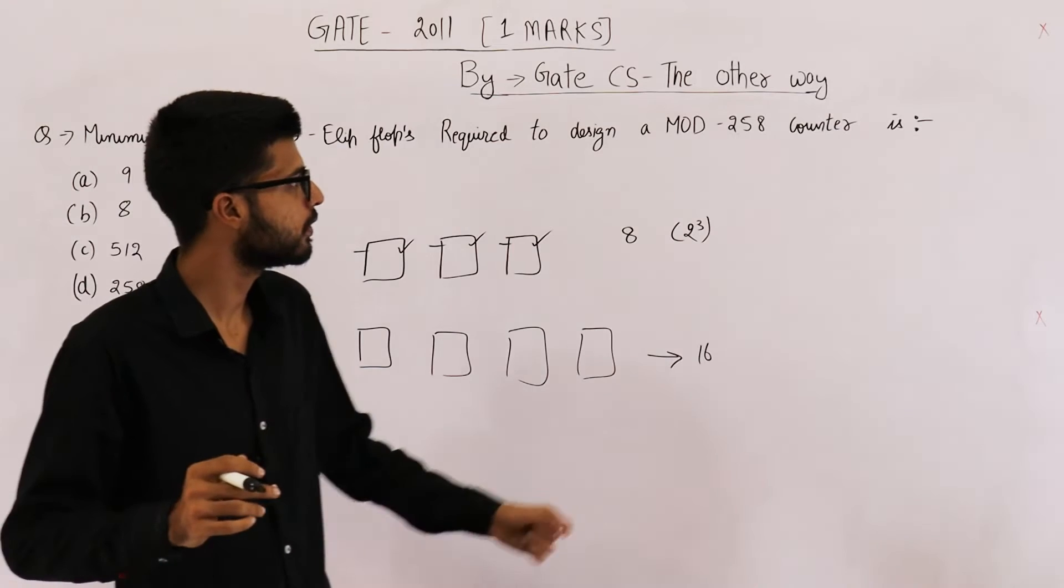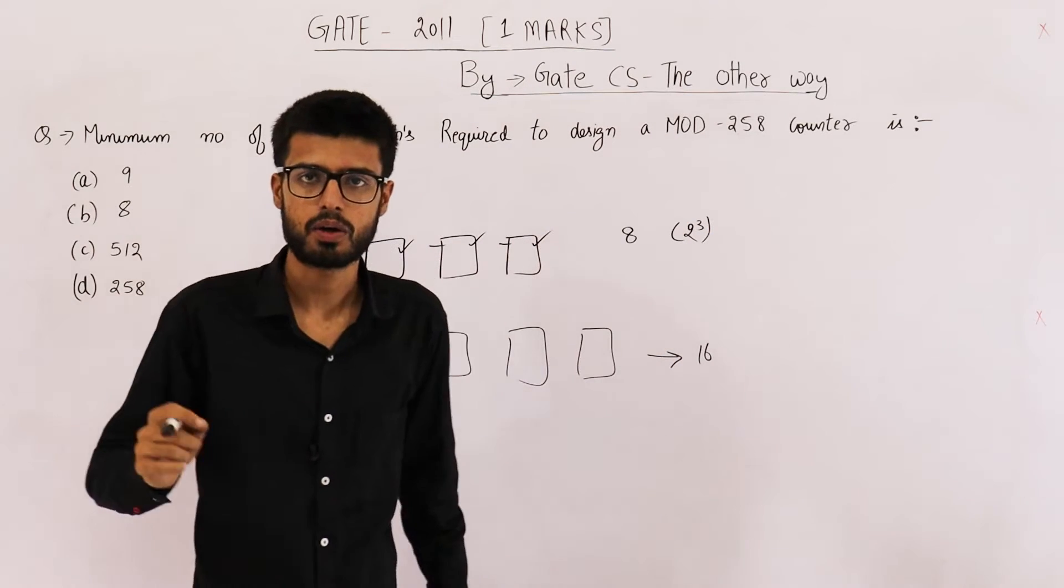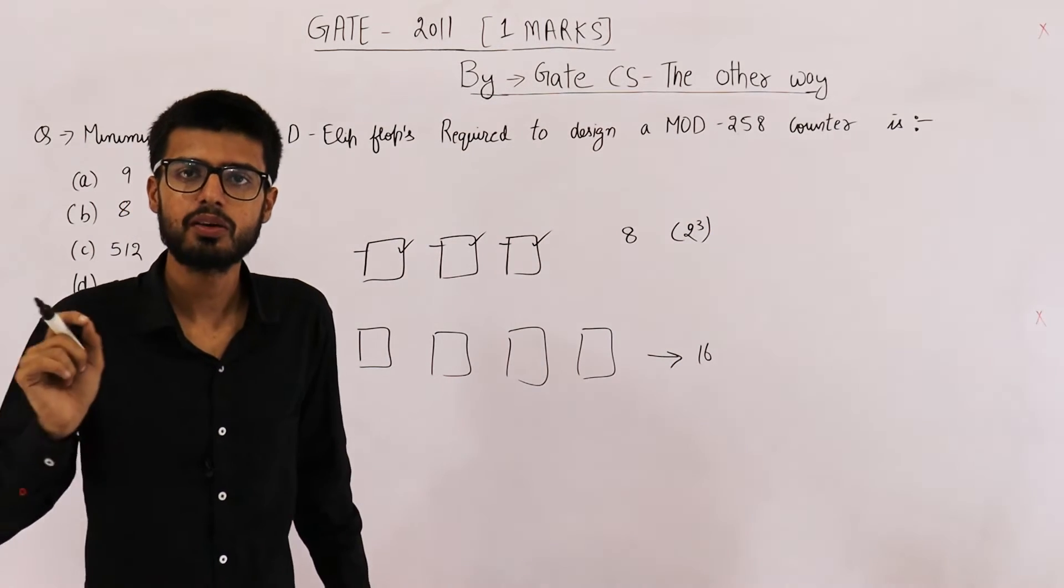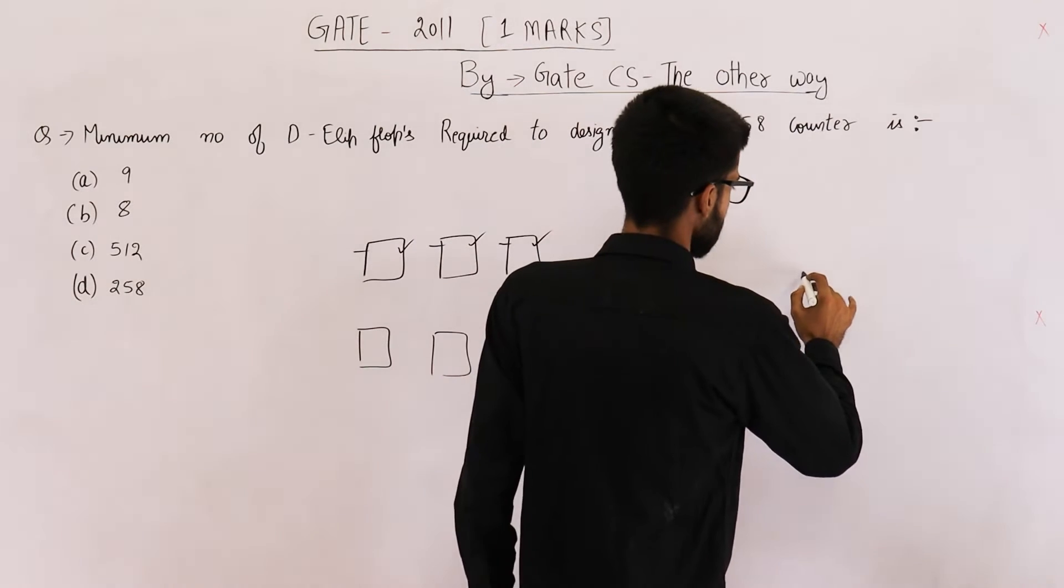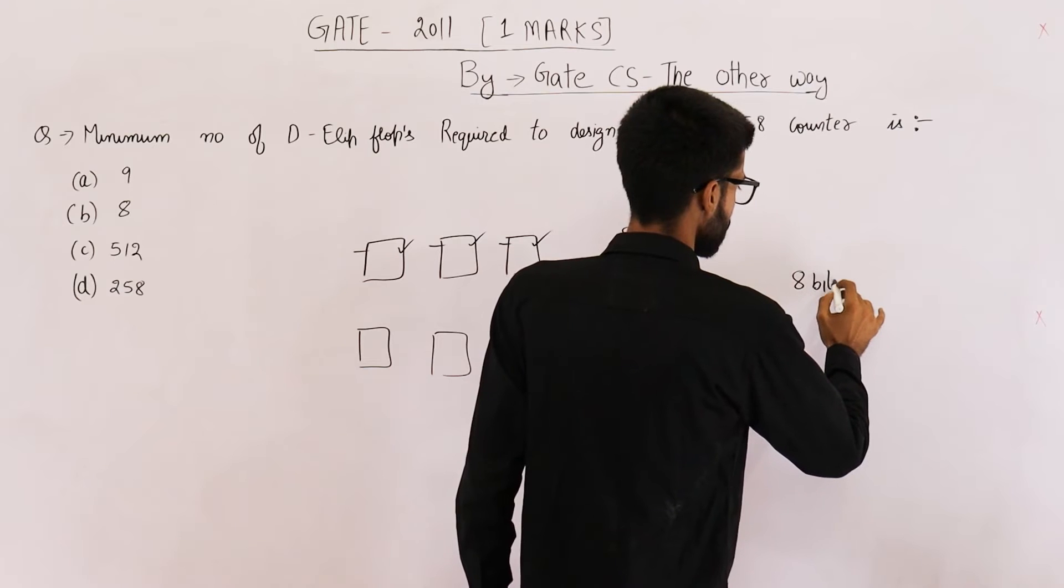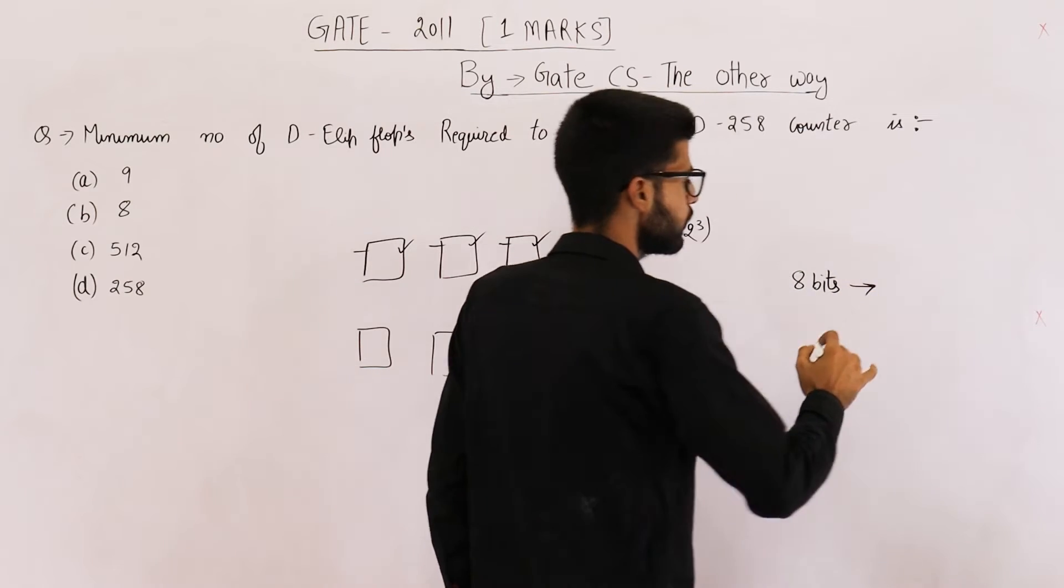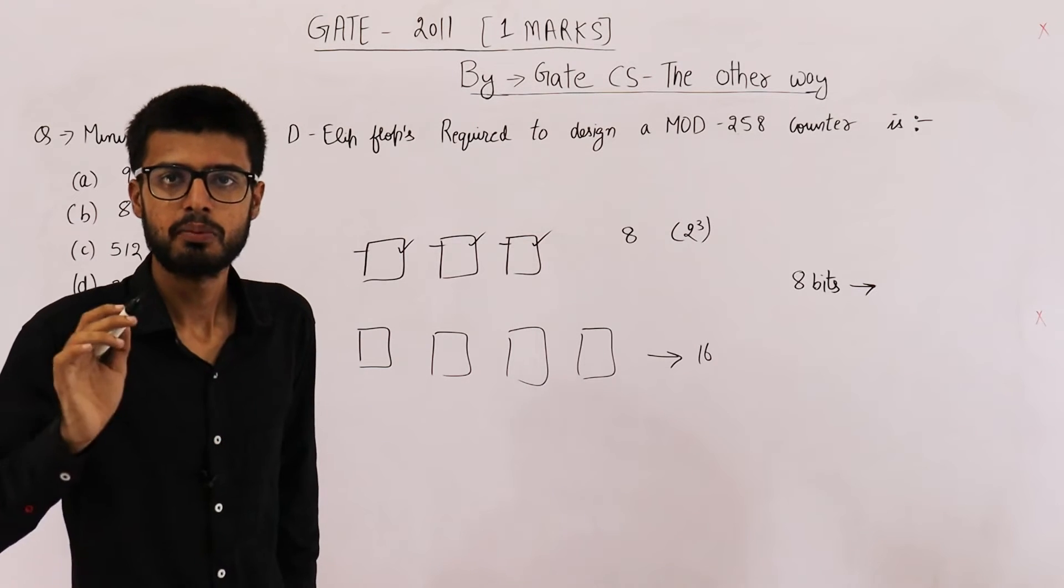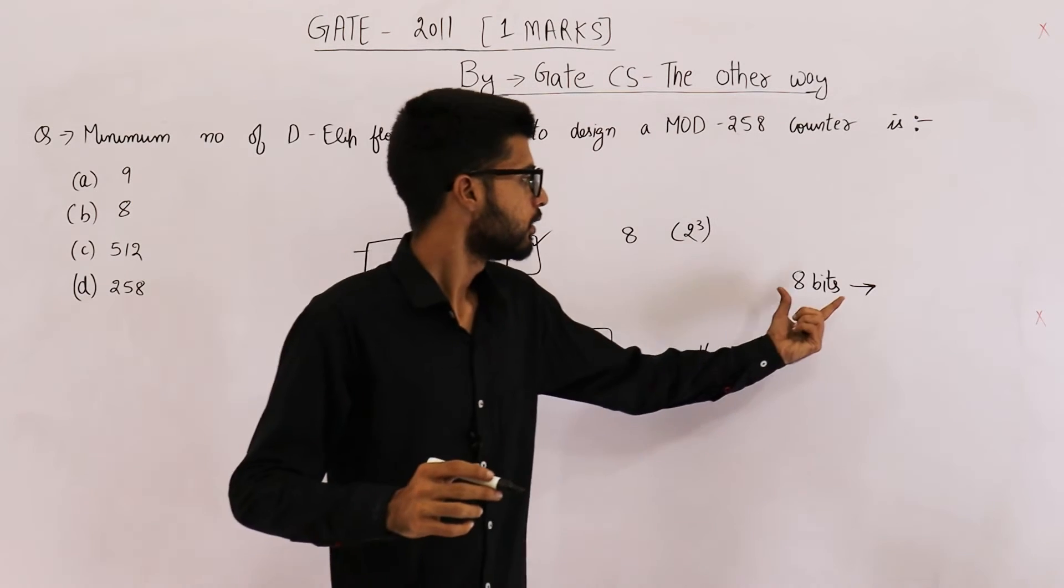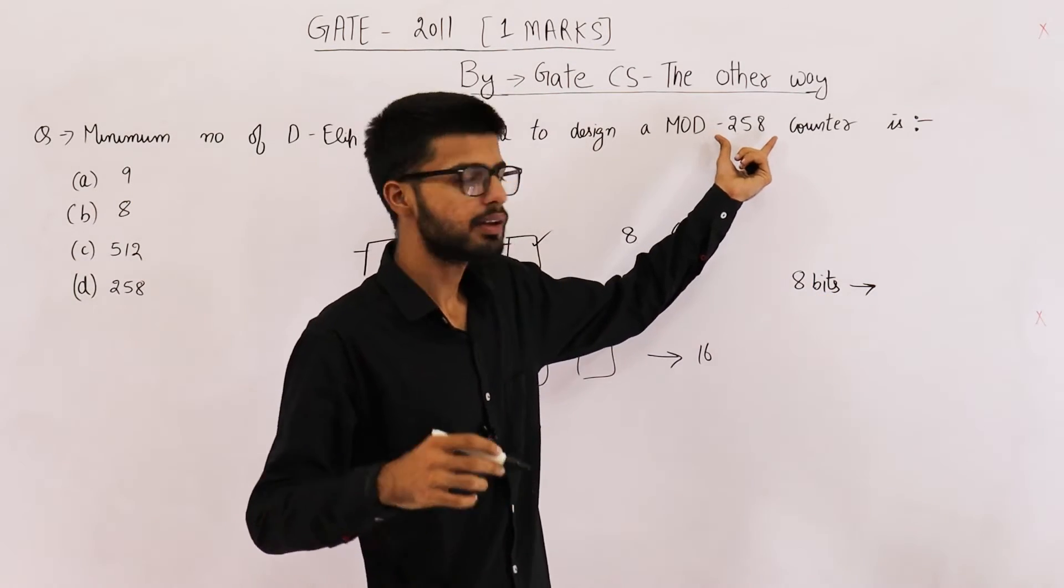We actually want to design a mod 258 counter. That means we need 258 different states. With 8 bits you can design 2 raised to the power 8, that means 256, a mod 256 counter. So 8 bits are not enough.